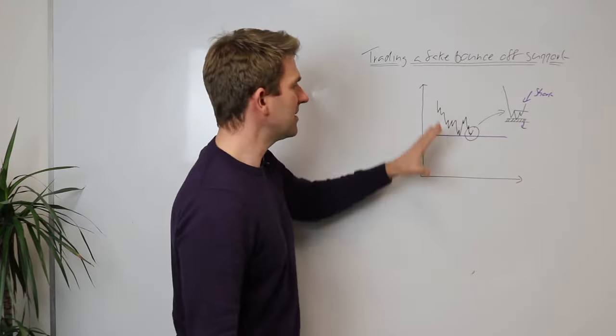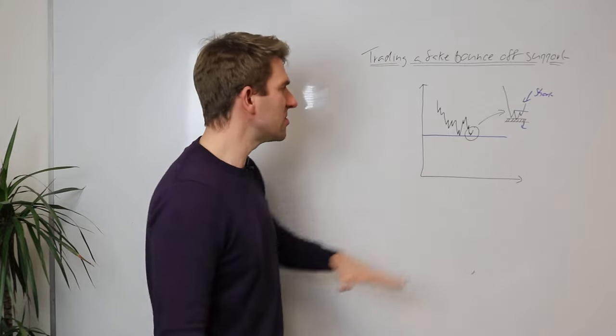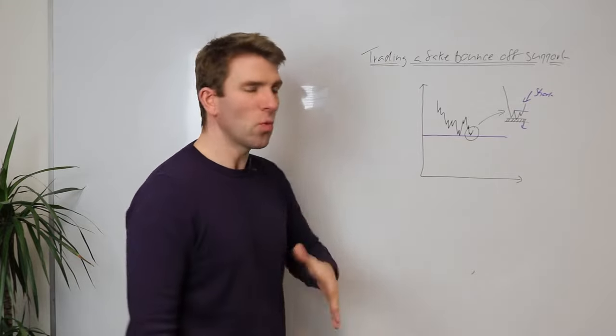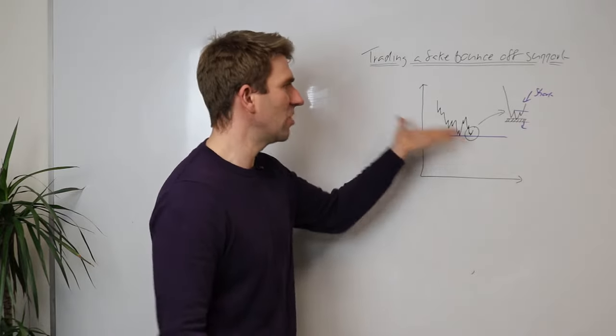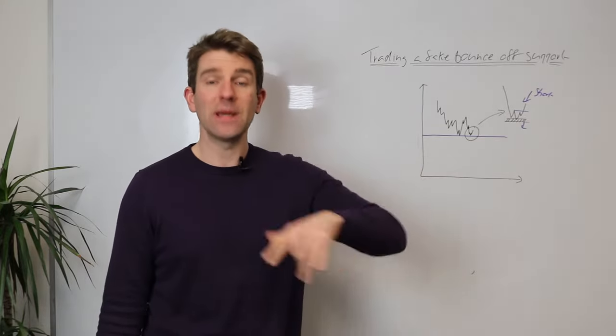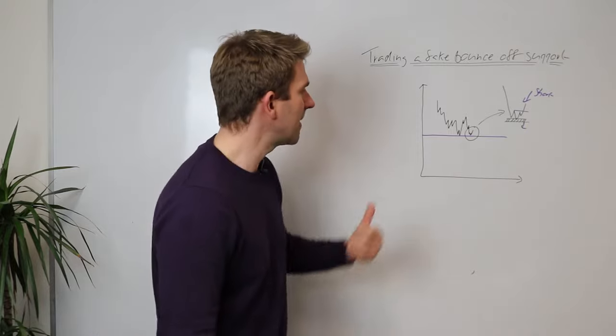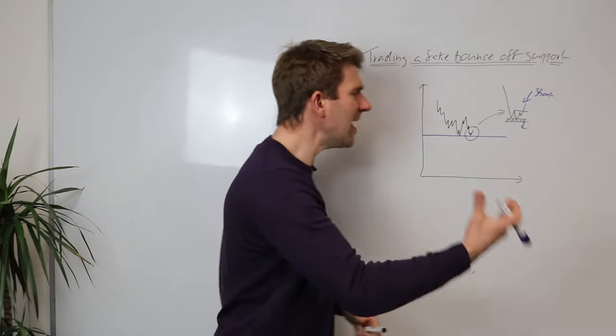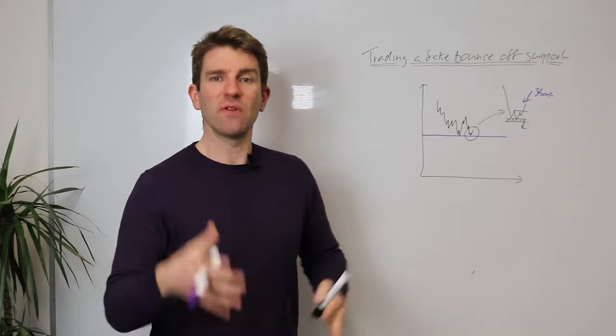You've got to be in a downtrend, weak market, weak stock, weak currency pair, whatever it is. You don't want to be trading this in an uptrend because the likelihood is support holds in an uptrend. So pick a good, weak downtrending market. Then you get that second bounce off and then you're judging the strength of the move.